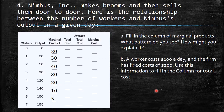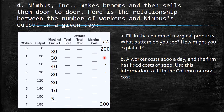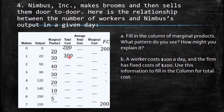Why does marginal product decrease after the third worker? Because workers start to get in each other's way — for example, if they're all working the same neighborhood, they won't sell as well as before. Each additional worker adds less output than the previous one.